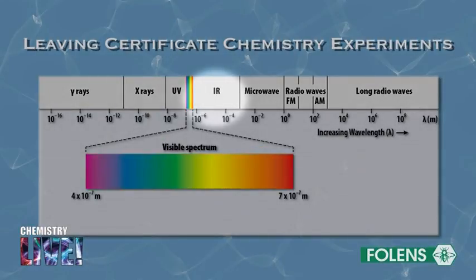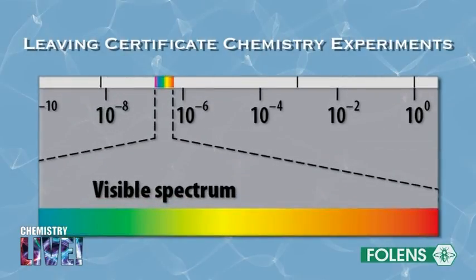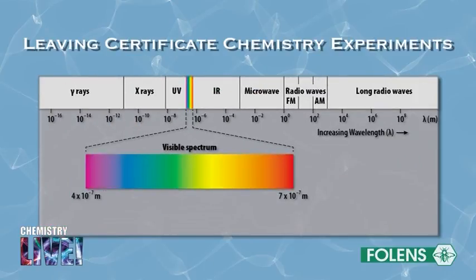The radiation known as infrared has wavelengths ranging from 10 to the minus 3 to 10 to the minus 6 meters, and therefore its wavelengths are longer than those of visible light.